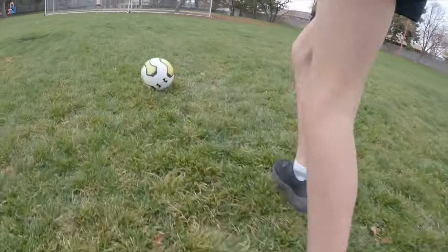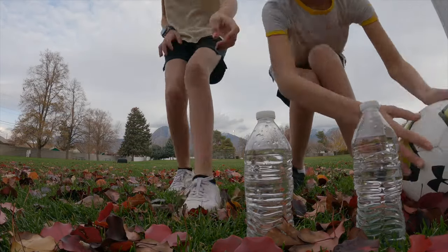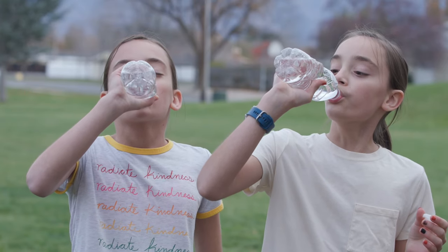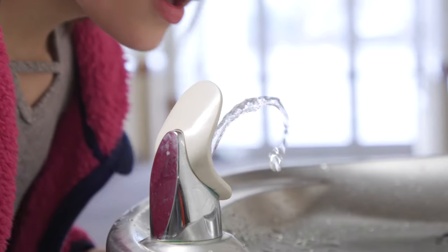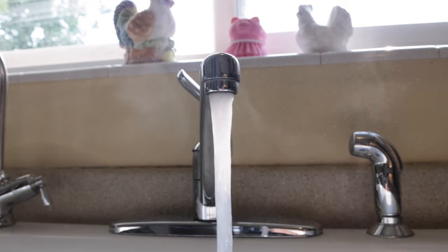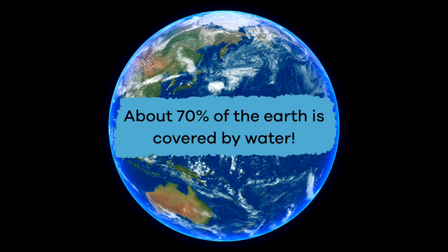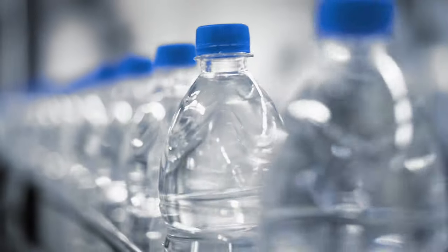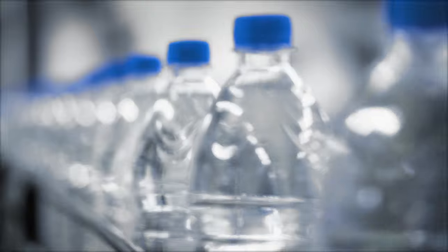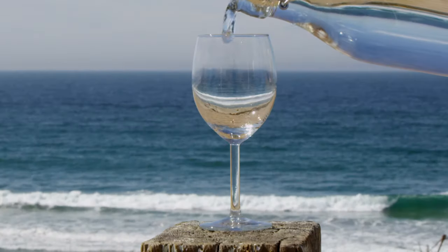When you are really thirsty, there is nothing better than a cool drink of water. But have you ever wondered where your water comes from before it hits the drinking fountain, a faucet, or your refrigerator? About 70% of the Earth is covered by water, but did you know that only a tiny portion of that water is drinkable? Stick around and we'll tell you why as we learn all about water.